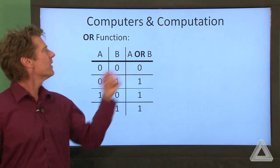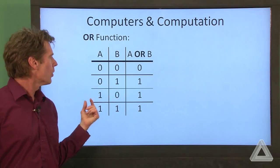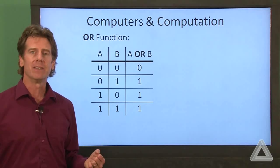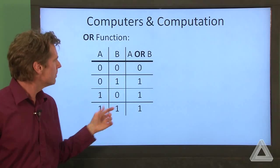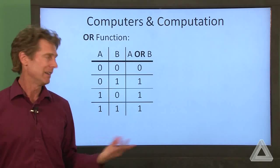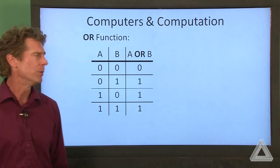So you can see where the OR name comes from. If either A or B are one, then the output is one. So this arrangement of inputs and outputs that show all the possible combination of inputs and the corresponding outputs, this is known as a truth table.